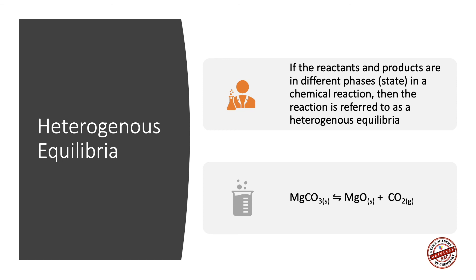Here is an example. Magnesium carbonate decomposes to give you magnesium oxide and carbon dioxide. Magnesium carbonate and magnesium oxide are both solids. Carbon dioxide is a gas.